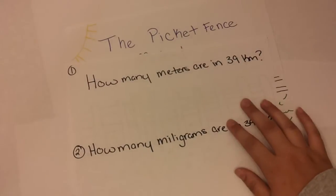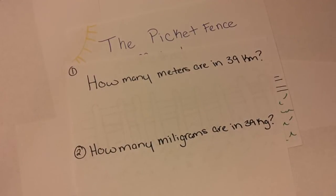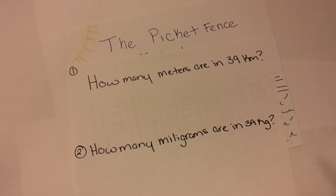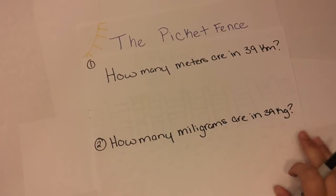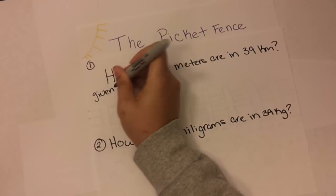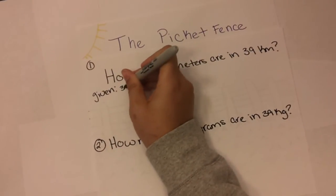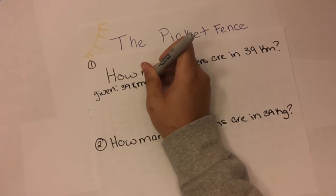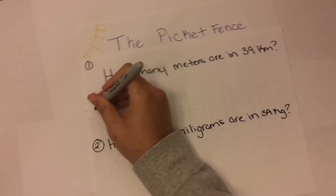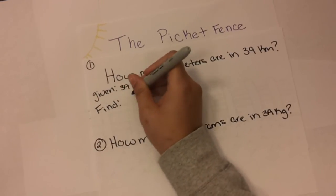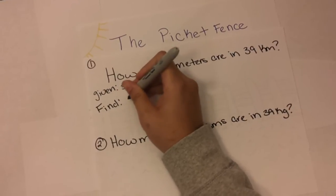The first example that I'm going to show you is, how many meters are in 39 kilometers? So we have given 39 kilometers and we're going to want to find meters.